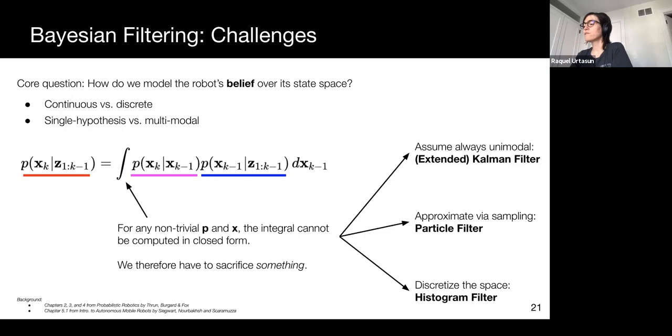The third alternative is to discretize the distribution, which results in a histogram filter, which is easier to work with, but can be computationally expensive.